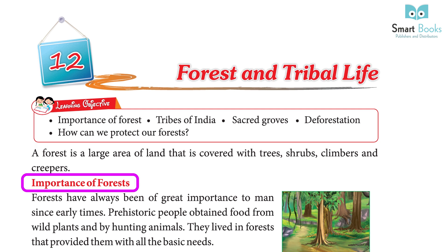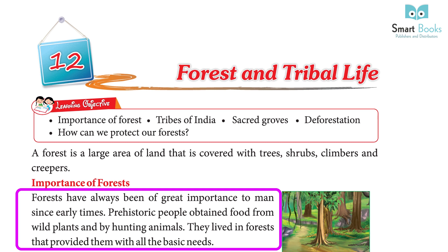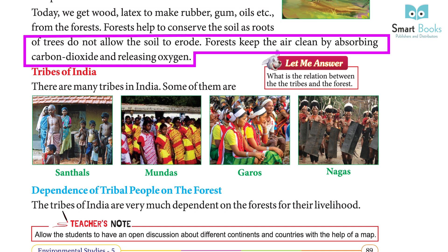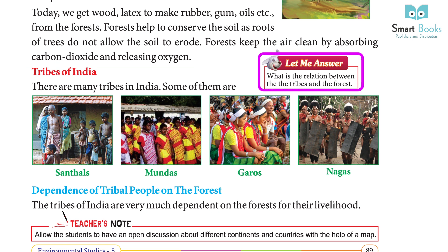Forests have always been of great importance to people since early times. Prehistoric people obtained food from wild plants and by hunting animals; they lived in forests that provided all their basic needs. Today we get wood, latex to make rubber, gum, and oil from forests. Forests help conserve soil, as roots of trees prevent soil erosion. Forests keep the air clean by absorbing carbon dioxide and releasing oxygen.